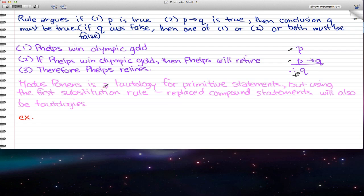Here's a simple example. Since the Olympics just finished, we're going to use Phelps. The first statement is 'Phelps wins Olympic gold,' so that's our P. The second statement is 'if Phelps wins Olympic gold, then Phelps will retire.' That's an implication represented by P implies Q. In the second statement, we also have 'Phelps will retire,' which is represented by Q.